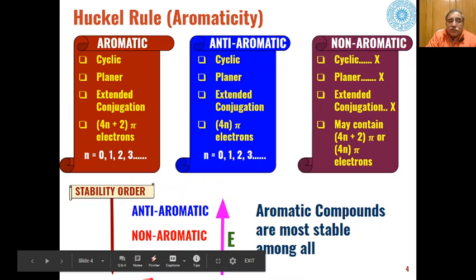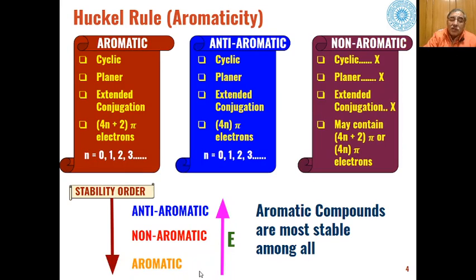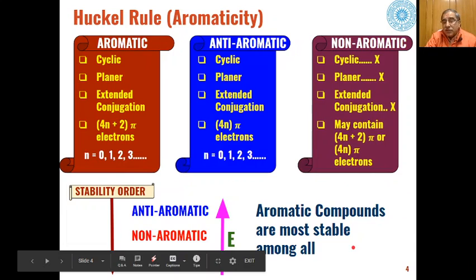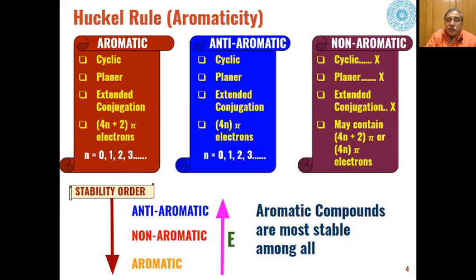Aromatic compounds are the most stable, then non-aromatic, then anti-aromatic. Because aromatic compounds are the most stable, energy-wise they have the lowest energy, then non-aromatic, then anti-aromatic. So on the basis of stability, aromatic compounds are the most stable among aromatic, non-aromatic, and anti-aromatic compounds.